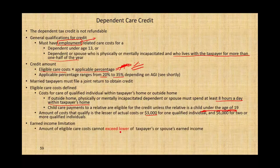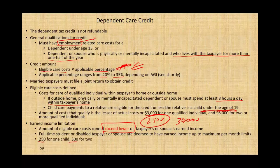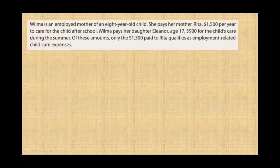Earned income limitation: the amount eligible for care costs cannot exceed the lower of the taxpayer's or the spouse's earned income. For example, if one spouse earns $30,000 and the other earns $2,500, the limit is applied to the $2,500. Full-time students or disabled taxpayers or spouses are deemed to have earned income up to the maximum per month limit — if your spouse is attending college or is disabled, we assume they're earning $250 per month for one child or $500 per month for two children.